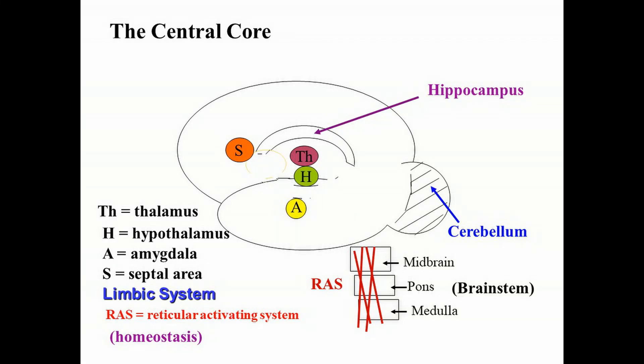Now we need to talk about the structures of the brain that lie underneath the cerebral cortex. For this course, let's refer to these structures as the central core. There are other ways of dividing up and understanding the brain, but this seems like the simplest and most appropriate for a general psychology course. Looking at this diagram, we are looking at all the different structures of the brain beneath the cerebral cortex, and we're going to start talking about the brain stem first, on the bottom right of the screen.